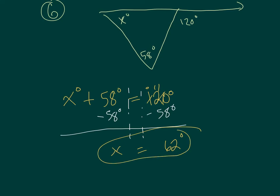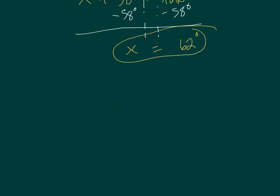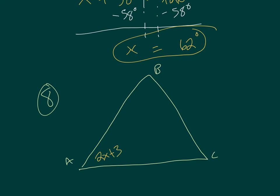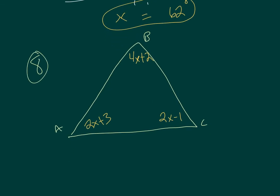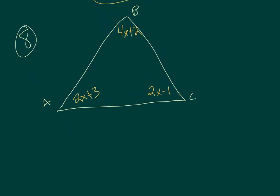Last one, let's talk about number 8. Number 8 says in triangle ABC, the measure of angle A is 2x plus 3, the measure of angle B is 4x plus 2, and the measure of angle C is 2x minus 1. What are the measures of the angles? Let's draw a triangle. I'm going to call this A, B, and C. And they give us some information. A is 2x plus 3, B is 4x plus 2, and C is 2x minus 1. Using what we know about the interior angle sum theorem of a triangle, all of these angles need to add up to 180. So let's set up an equation.